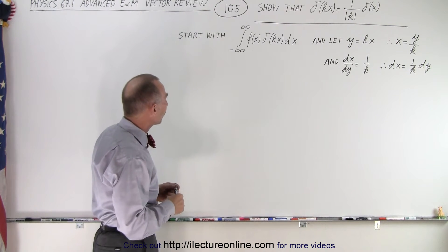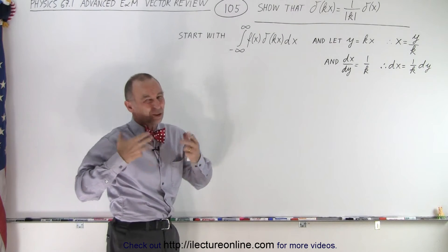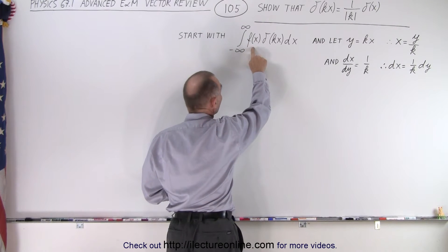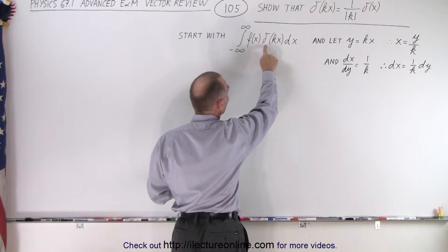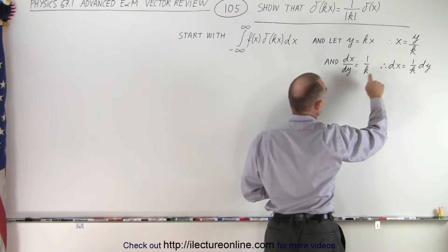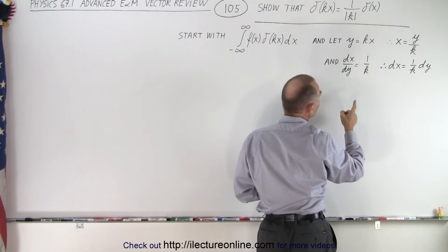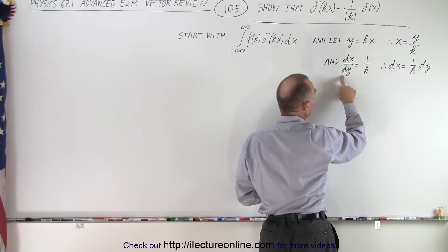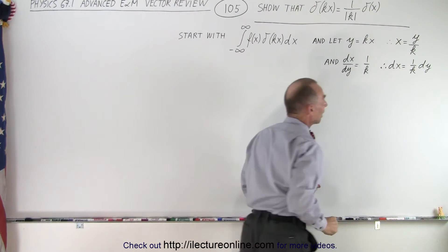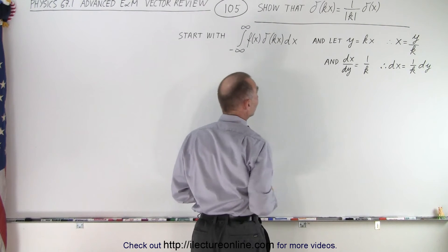In order to show that, we're going to use a few tricks. We're going to start with the integral of the delta function multiplied times a function, because that's the only way a delta function actually has true meaning. We integrate from minus infinity to infinity of some function f(x) times the delta function of kx dx. We make the substitution y equals kx, so that x equals y over k. Taking the derivative, dx equals 1 over k dy.